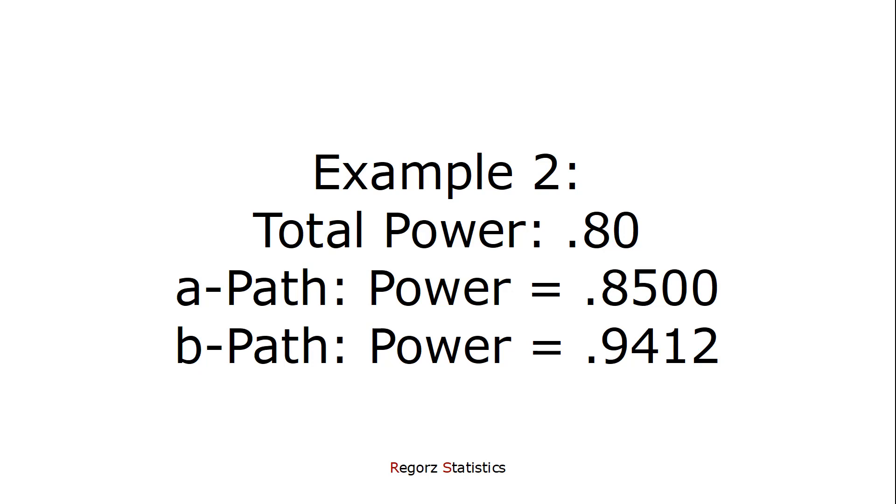So in most cases even for this approach I would use the paper by Fritz and MacKinnon instead of trying out several different combinations of powers for those two paths. But if you want a total power of, for instance, 0.95, which you don't get from the paper, then this would be a possible approach.